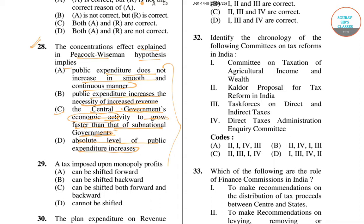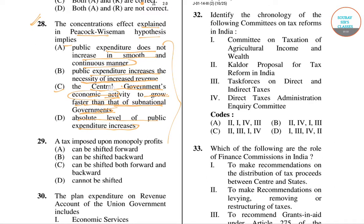Peacock and Wiseman gave the concentration effect, which says the central government's economic activity grows faster than that of sub-national governments. Now we'll come to question number 29.